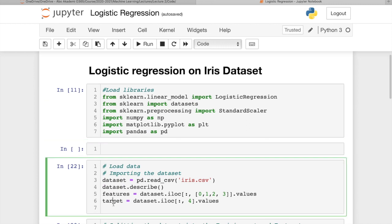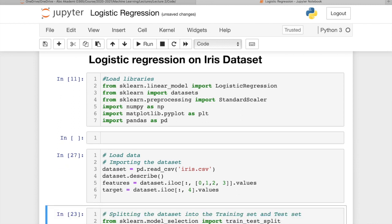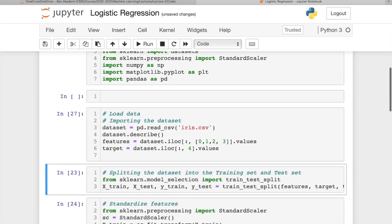So let's get to work and import the dataset. The dataset is in CSV format, iris data, and I'm going to define the set of features and the target, which is the value that we want to predict.